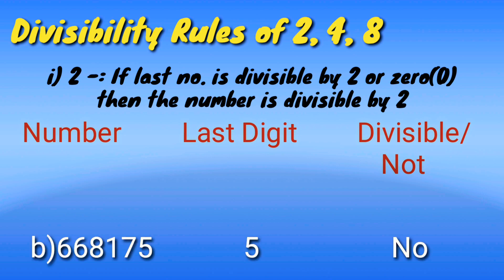Another example: 6,68,175. The last digit is 5. 5 is not divisible by 2, so the whole number is not divisible by 2.